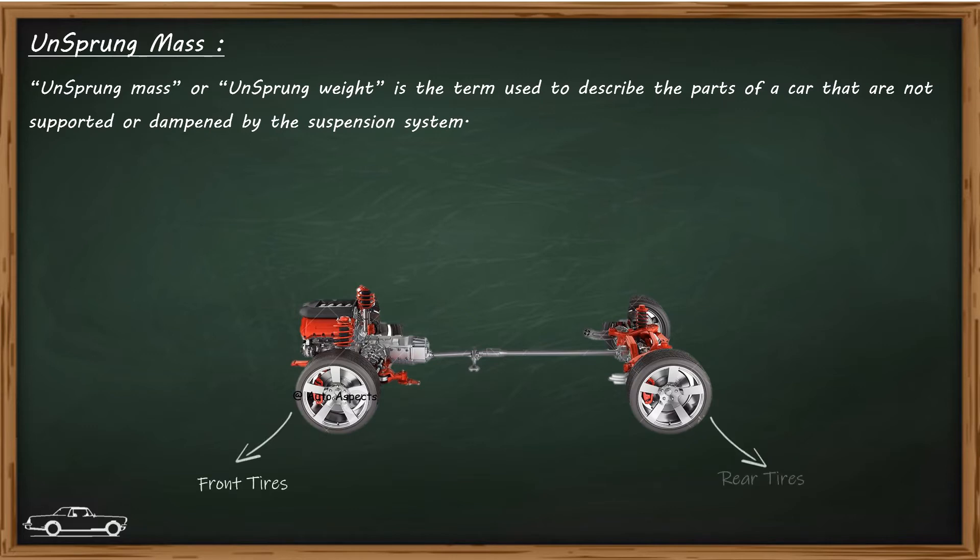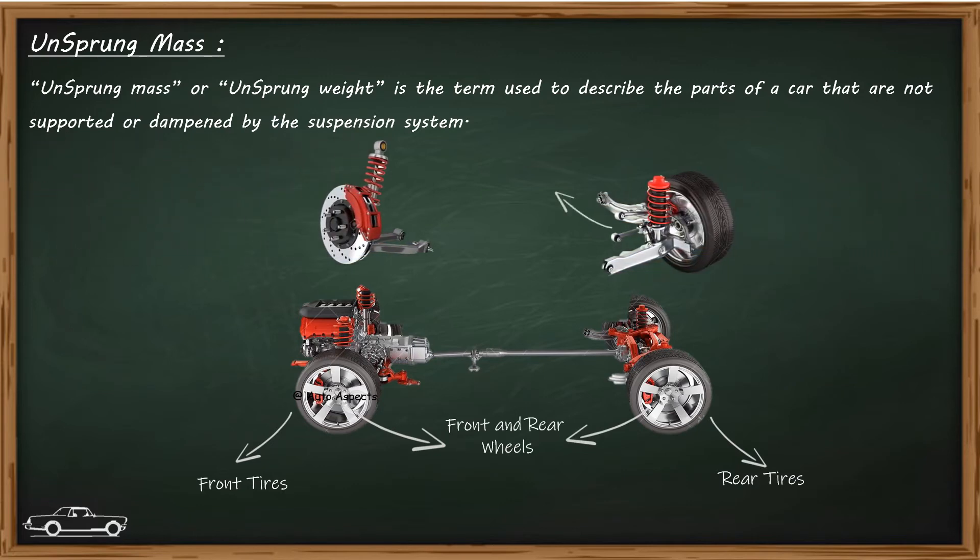Unsprung weight includes wheels, tires, brakes, and other structural members like linkages which are not supported by spring.